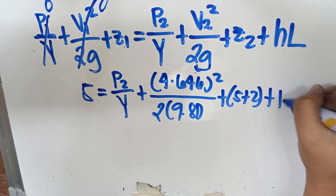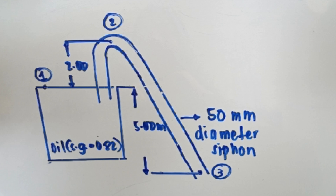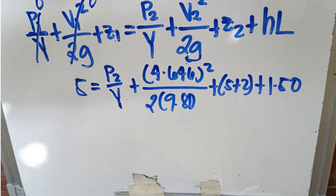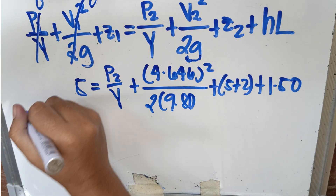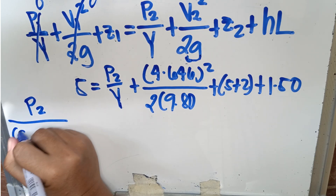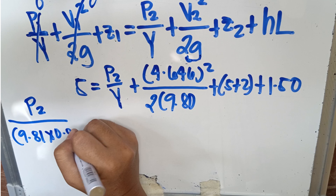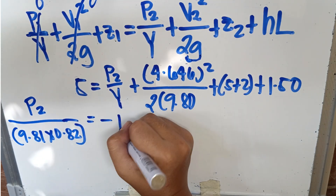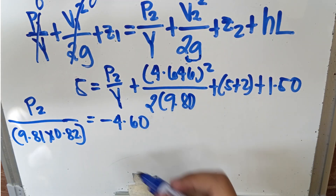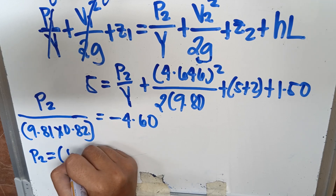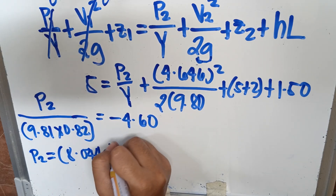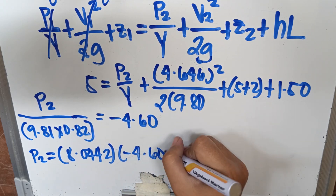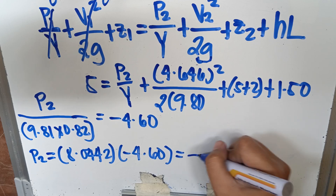Plus 1.50 meters head loss from point 1 to point 2. From the diagram, point 2 is 2 meters above the level of point 1. Since point 1 is at an elevation of 5 meters, the elevation at point 2 is 5 plus 2, which equals 7 meters. V2 equals V3 due to continuity of flow in the siphon. Solving P2 over gamma: substituting gamma as 9.81 times 0.82 (specific gravity), gives negative 4.60 meters. Therefore, the pressure at point 2 equals negative 37 kilopascals.